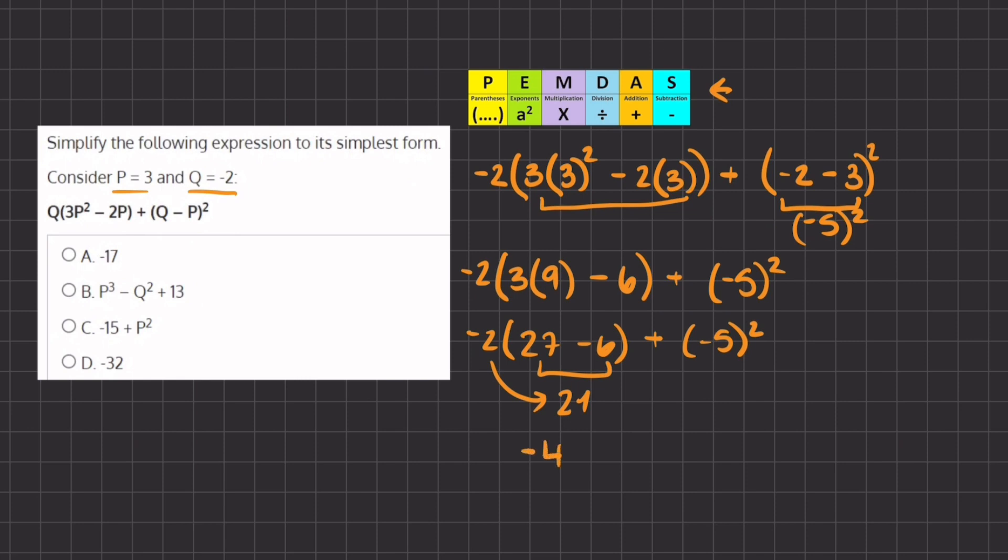If we multiply negative 2 by 21, we get negative 42. Now we add our exponent. We have negative 5 times negative 5, which gives us positive 25, because a negative times a negative gives us a positive. So negative 42 plus 25 gives us negative 17, and so negative 17, which is option A, is our final answer.